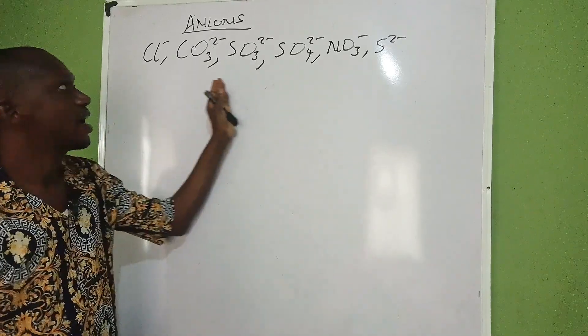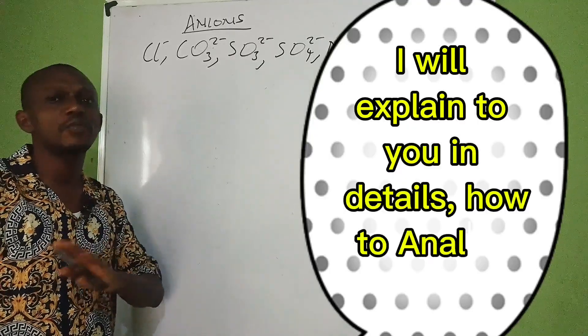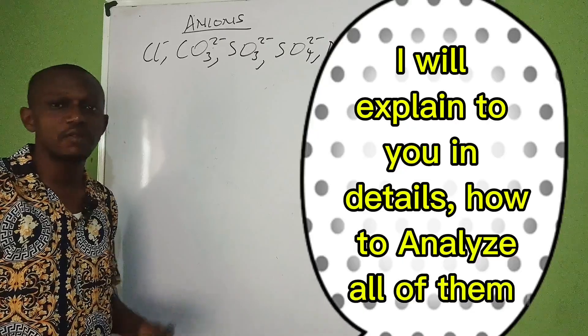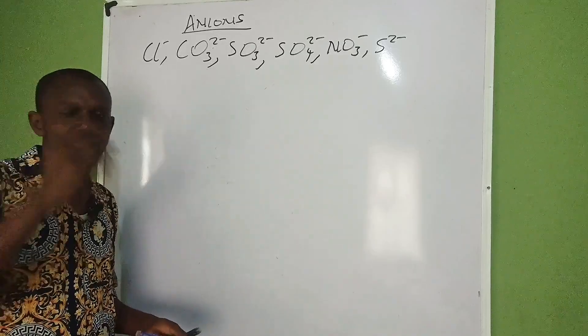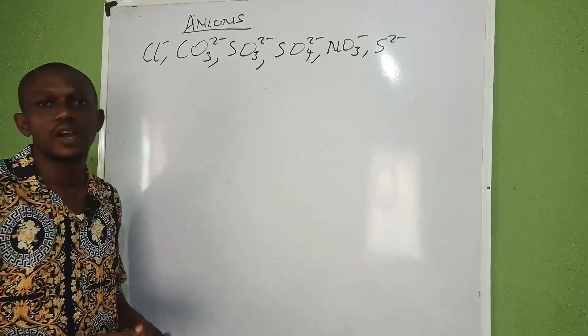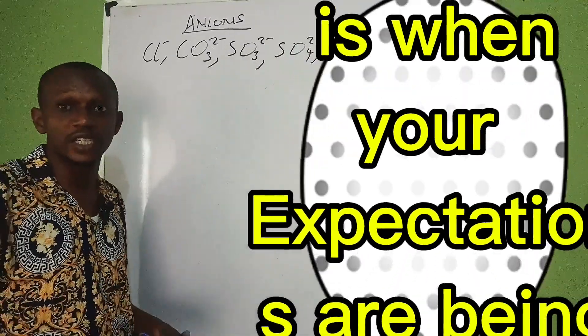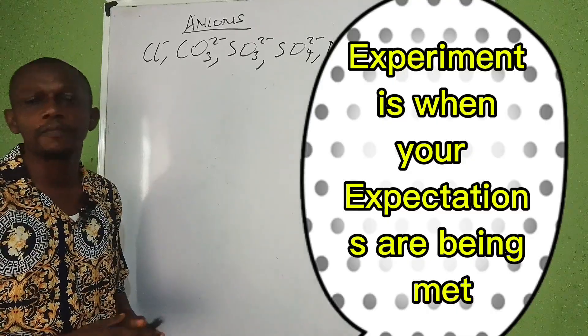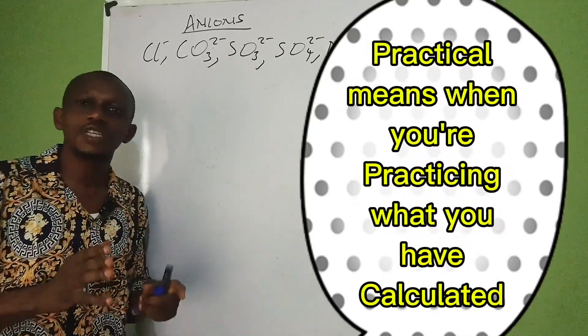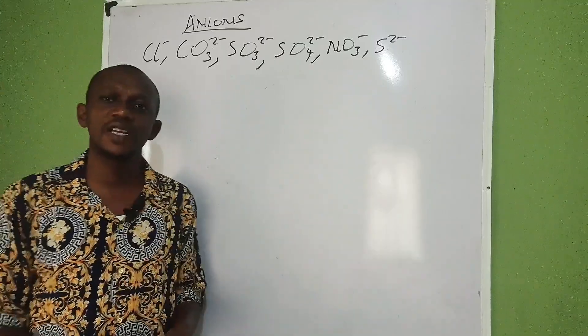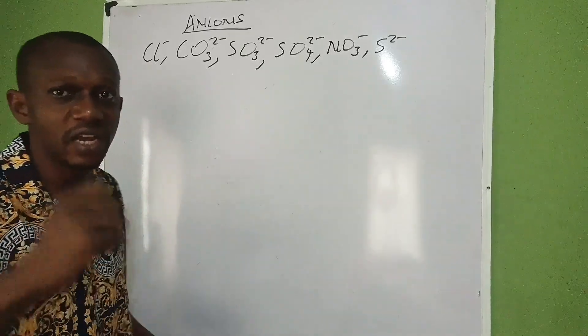As far as these anions are concerned, you must know how to do a preliminary test of each of them and confirmatory test. We have some common reagents that we always use. I will give you the reagents and tell you the color change, the precipitate you are expecting to get. In GCE, you must know everything offhand. You don't have to do any account of experimental procedure.